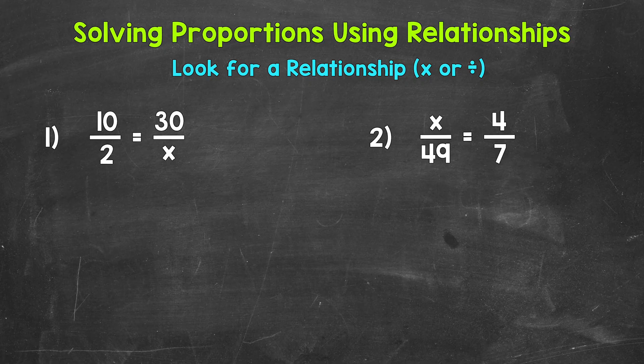So let's look for a relationship that uses multiplication or division horizontally, so side to side, between the ratios. We can use this relationship to figure out the unknown, x.